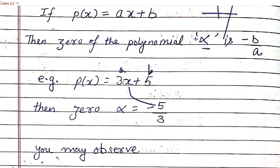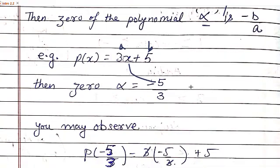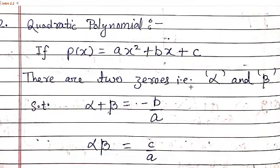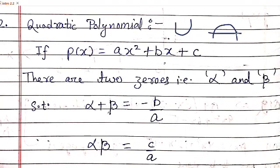In a linear polynomial there is only one zero, and that zero is equal to minus b by a. Now we'll proceed to quadratic polynomials. Quadratic polynomials are of type ax squared plus bx plus c, where a, b, c can be any real numbers and a can't be zero. Any quadratic polynomial makes a parabola which intersects the x-axis at two different points. Therefore quadratic polynomials always have two zeros.